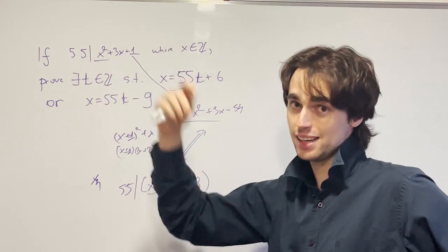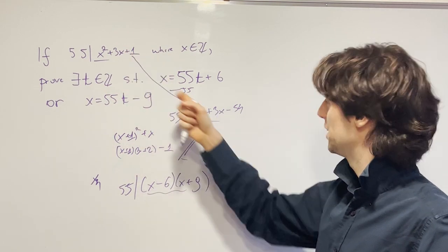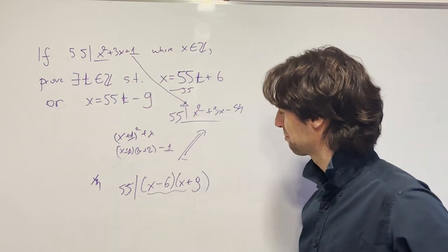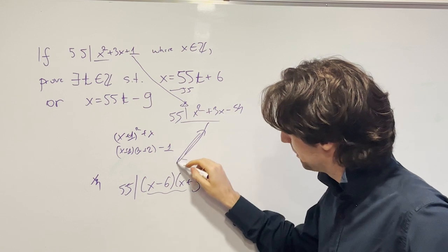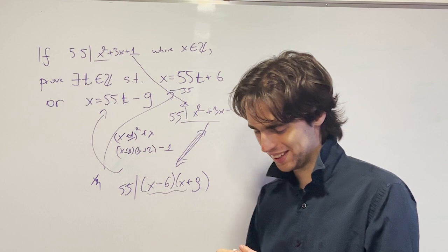If 55 divides a, 55 divides a minus 55. And so from here we get to here. And from here we get to this thing right here. And this implies that x is one of these two things.